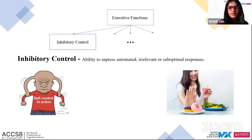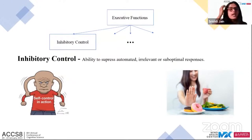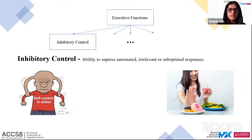Executive function is a set of cognitive processes that facilitates goal-oriented behavior. For example, your phone might ring — you have the impulse to check it. Right now, that response is inhibited in my brain. Inhibitory control gives us the flexibility to suppress automated, inappropriate, or irrelevant behavior. As my current short-term goal is to present at this conference, receiving a call is irrelevant and inappropriate.